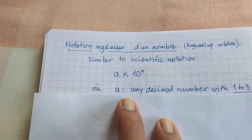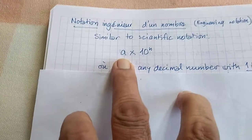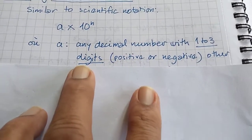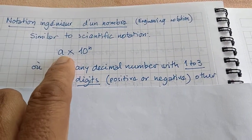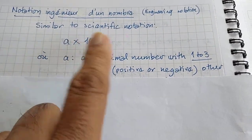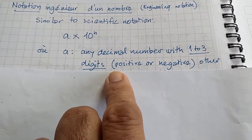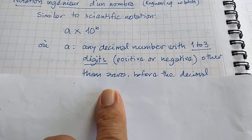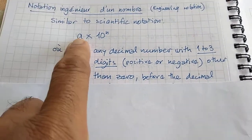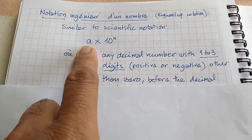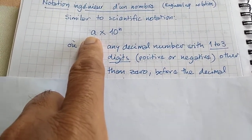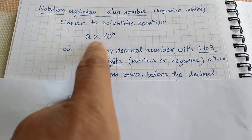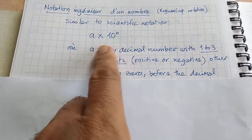In engineering notation, a — this first number — can be any decimal number with 1 to 3 digits. So in scientific notation you only have one digit, but in engineering notation you can have 1 to 3 digits. This number can be positive or negative, other than 0, before the decimal. That means anything from 1 to 999, followed by the decimal point and any number of digits after.